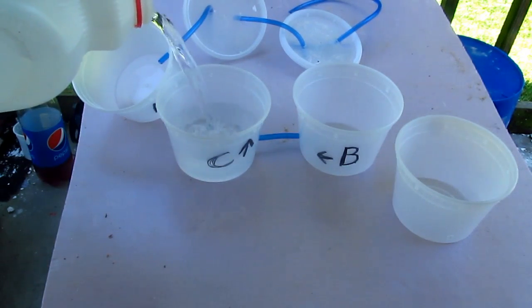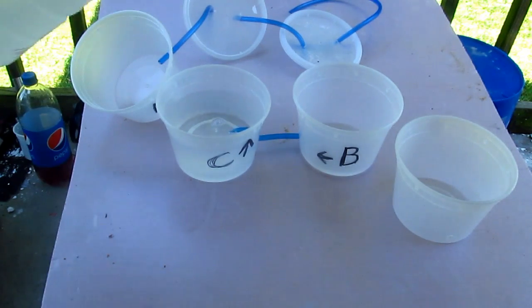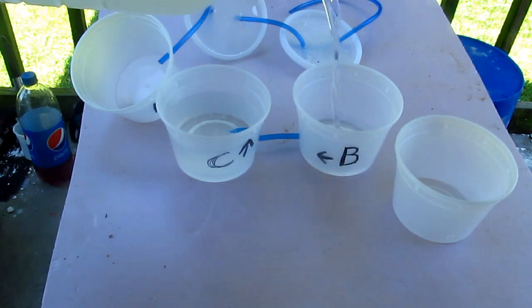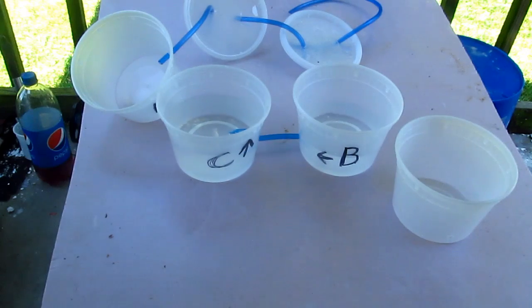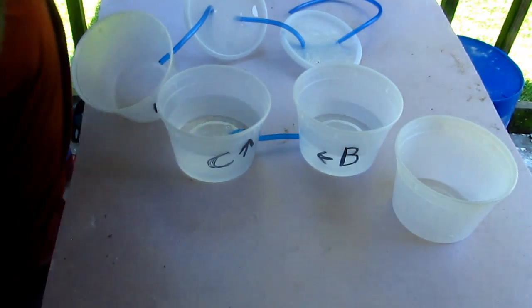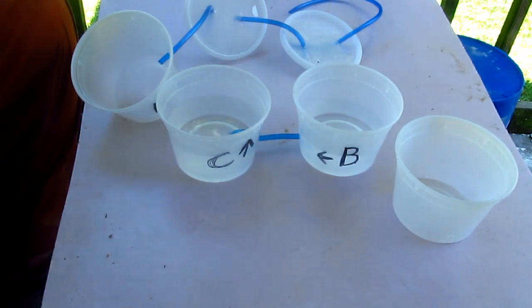So we're going to fill this guy here up and as you see it starts filling B on its own, but we're going to put about half full of B. We need a halfway decent air gap. Air is compressible. Water is not. So those two are going to level out while I put the lids on.